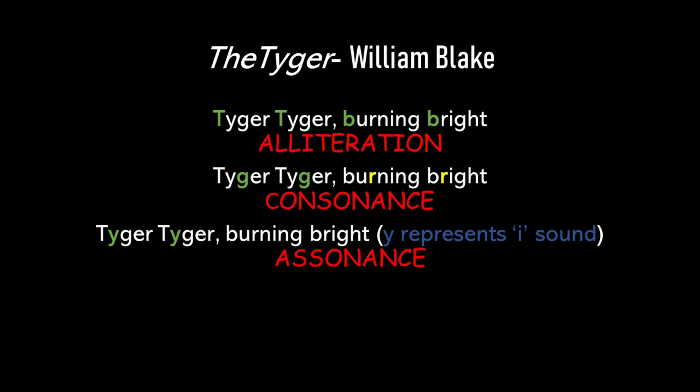Moving on to Consonance, we can see that the letters G and R are highlighted, so these consonant sounds have been repeated. In the case of Assonance we will focus on the vowel sounds. In this particular line the I sound has been repeated. The first two words Tiger is spelled T-Y-G-E-R, but the Y makes the I sound. So in this case the Y has been highlighted because that's the Assonance.